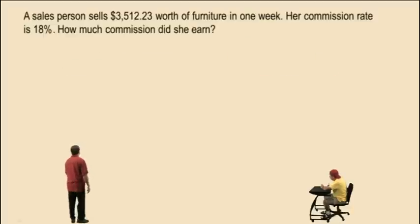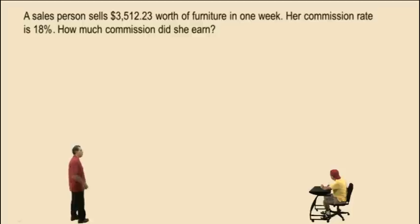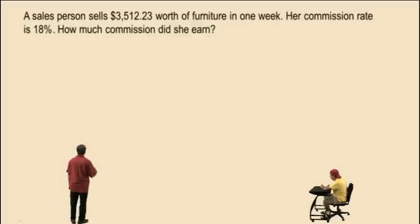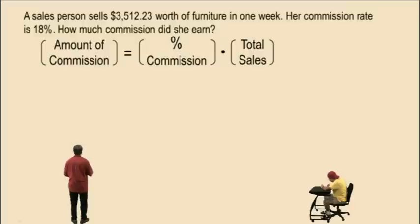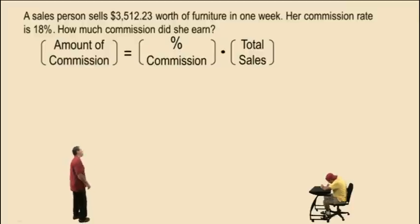A salesperson sells $3,512.23 worth of furniture in one week. Her commission rate is 18%. How much commission did she earn? Our equation: the amount of commission is equal to the percent commission times the total sales.